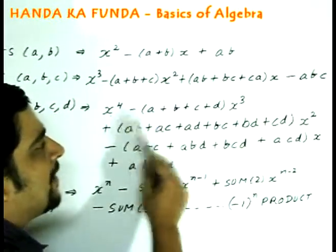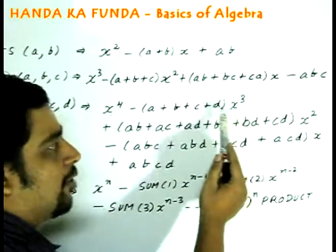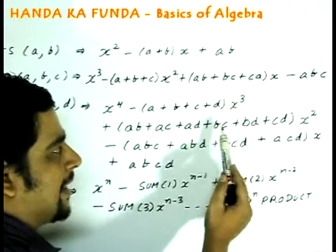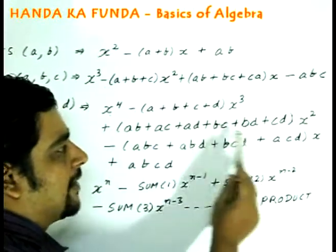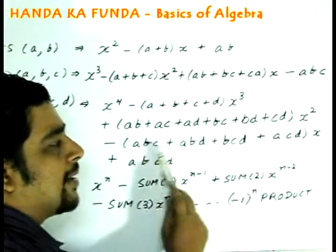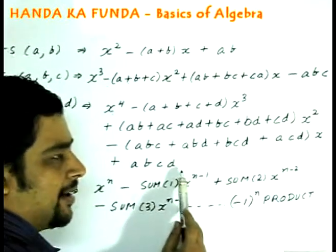The coefficient of the next highest term or the variable with the next highest power is sum of the roots taken one at a time, then sum of the roots taken two at a time, then sum of the roots taken three at a time, then the product.